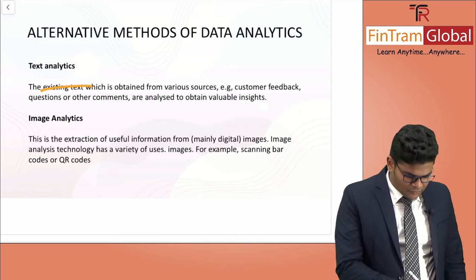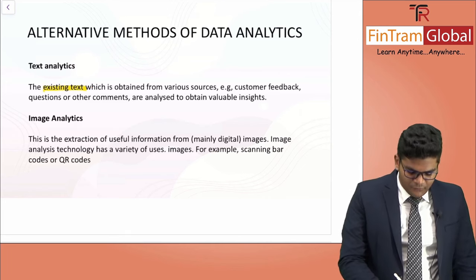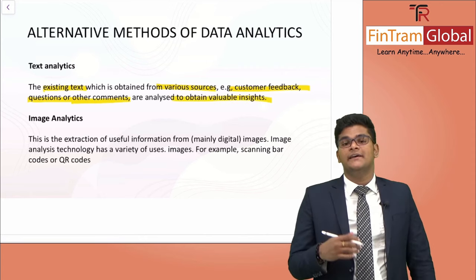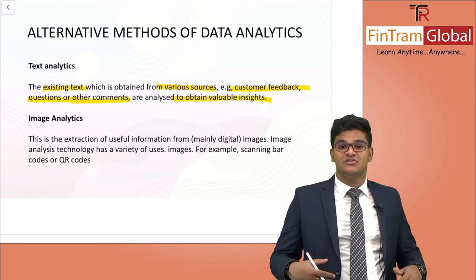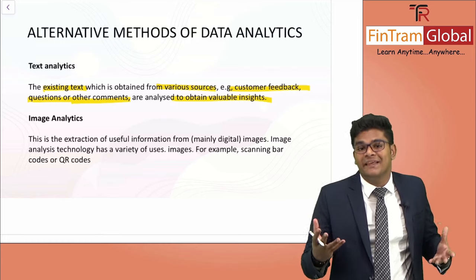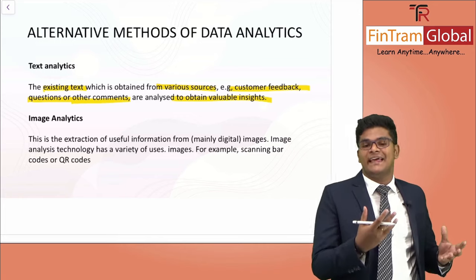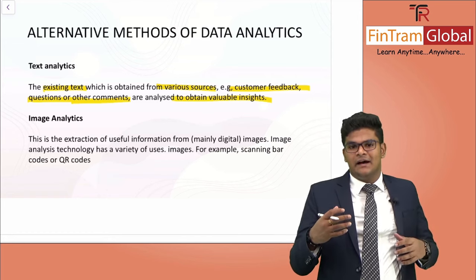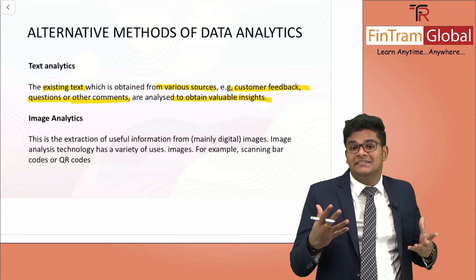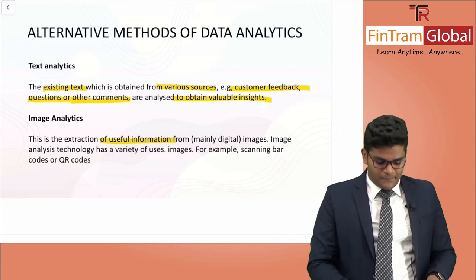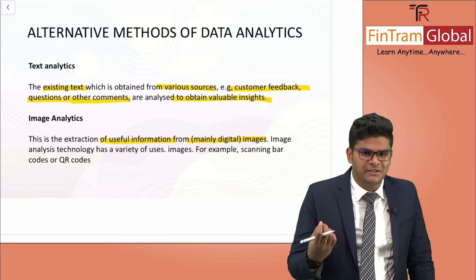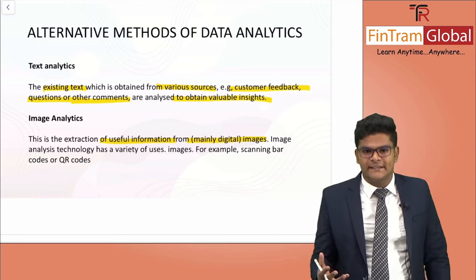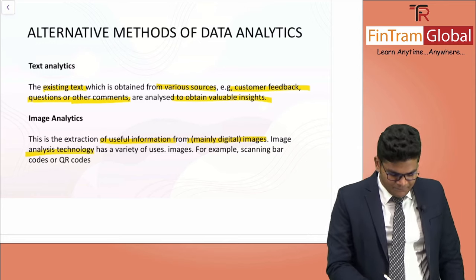Then there is image analytics — this is the extraction of useful information from mainly digital images. A digital image is basically an image created by a computer system — for example, barcodes or QR codes. Image analysis technology has a variety of uses such as scanning barcodes or QR codes. This particular code holds a lot of information — for instance, I might include a QR code on a package so the customer can scan it and go to my website to read about the product.